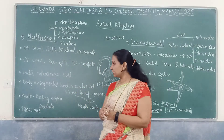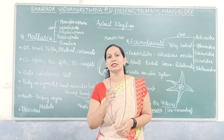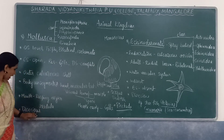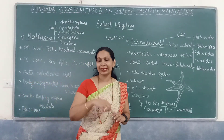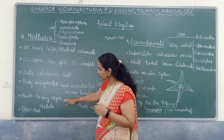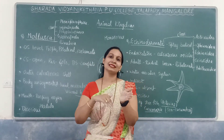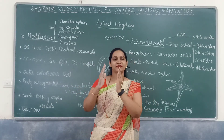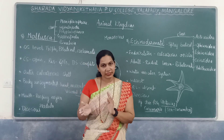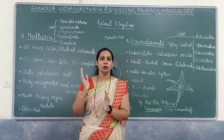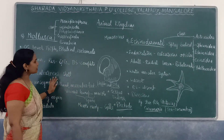Other examples include octopus, also known as devil fish, and Pinctada — the pearl oyster. Their mouth mainly contains a rasping organ called the radula. They are dioecious — sexes are separate with males and females present. If sexes are not separate, the organism is monoecious or hermaphrodite.